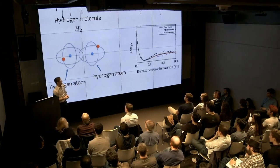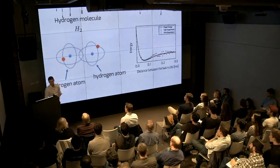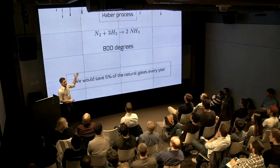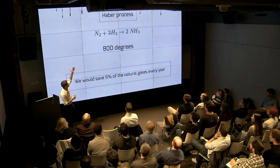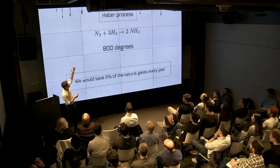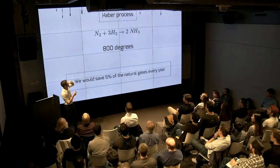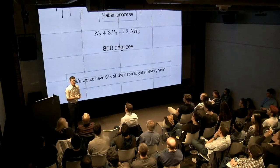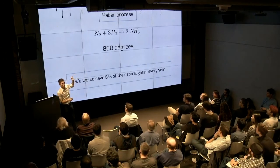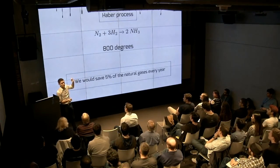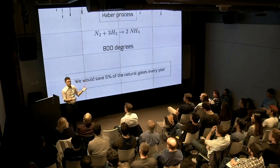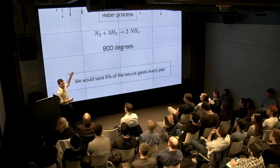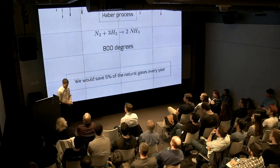Consider the Haber process, which is used to create ammonia. This process happens at 800 degrees Celsius thanks to a special catalyst. The same process is done by bacteria at room temperature. Imagine if we could simulate with a quantum computer the catalyst for this process — that would save us 5% of natural gas consumption every year. Thank you for your attention.